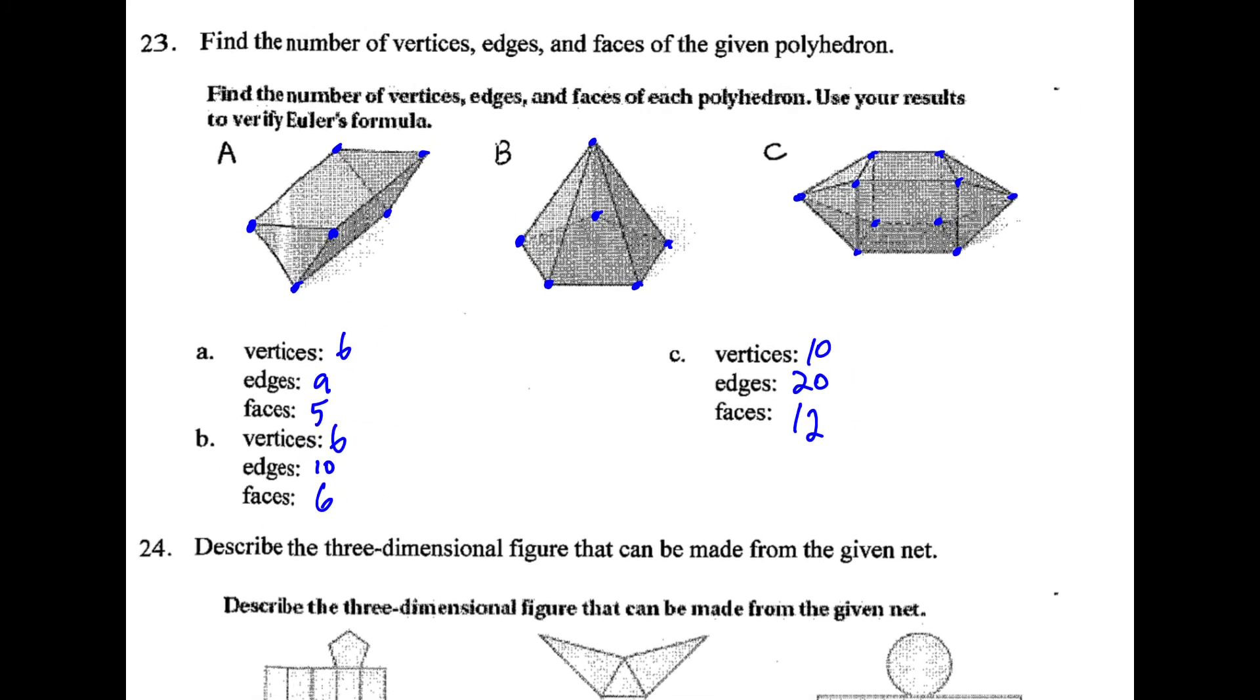For number 23, you can just count them up. And we also use that formula, the vertices minus the edges. So v minus e plus f is equal to 2. That's one way to write this formula anyway. So here if we took 10 minus 20, we get negative 10 plus 12 is equal to 2. And everything checks out.